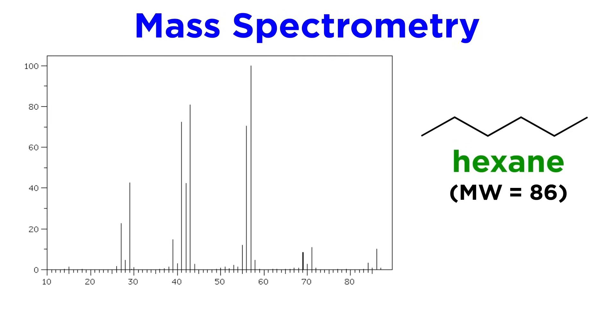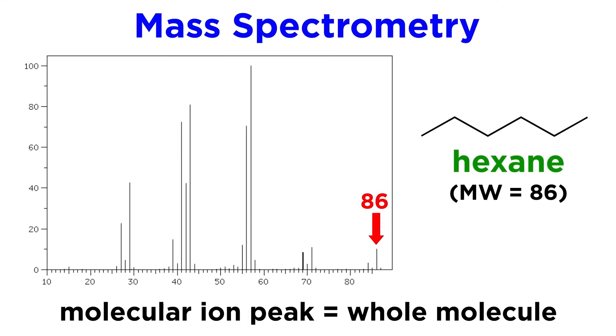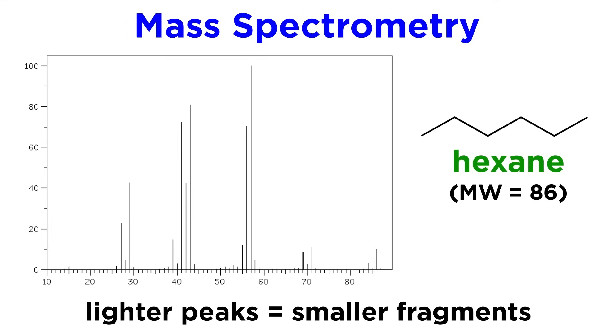To further solidify this concept, take a look at the mass spectrum for straight chain hexane. We get a molecular ion peak at 86, which corresponds with the molecular mass. Then we can see peaks that correspond with progressively smaller fragments as we begin to remove one carbon at a time.